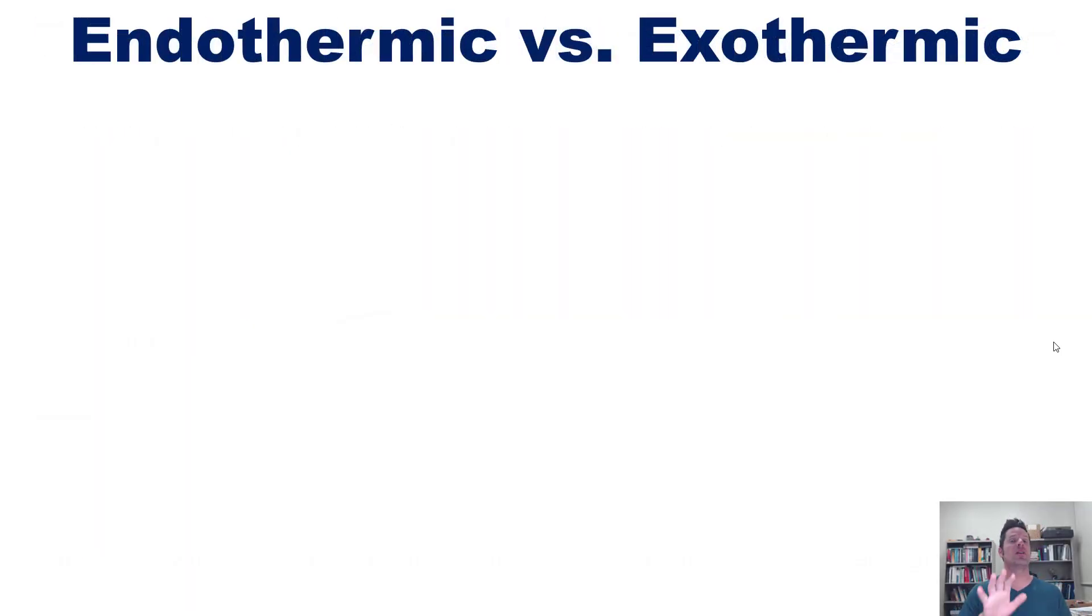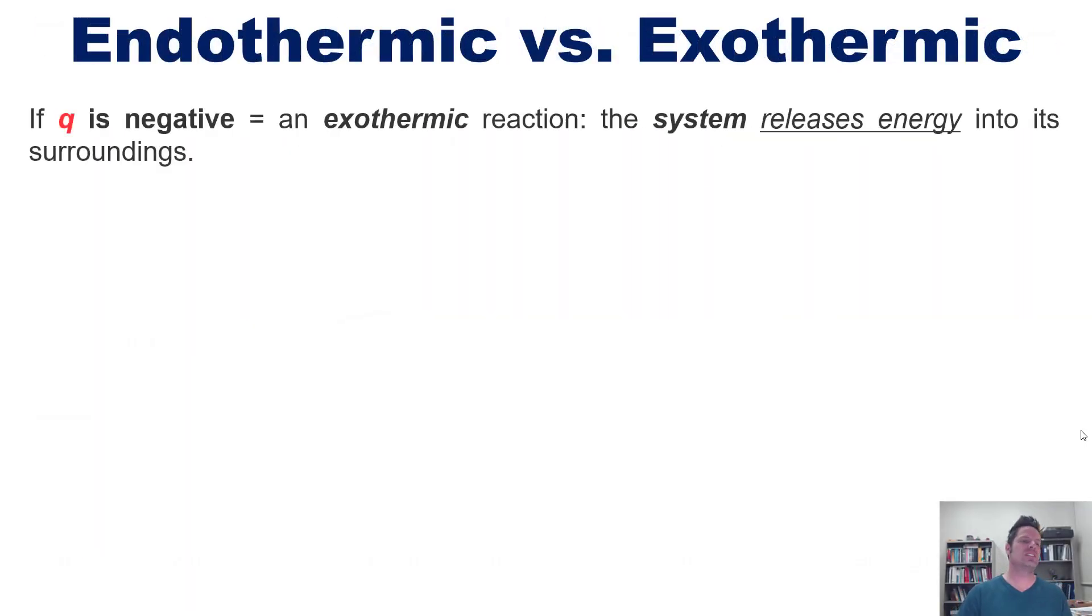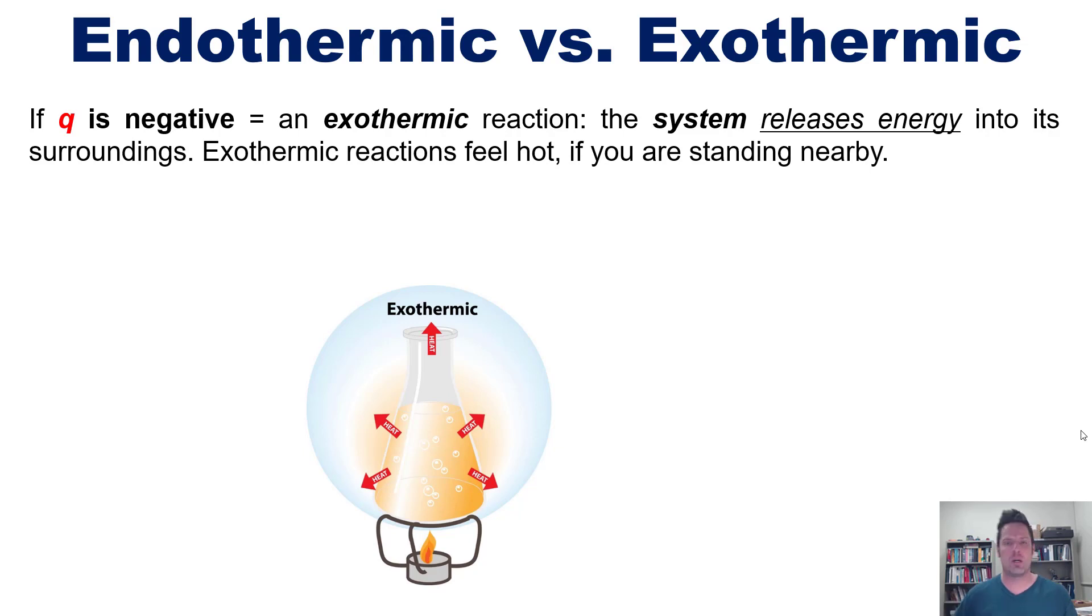As it turns out, and this is very important to remember, when Q is negative, you have an exothermic reaction. That's the word that we use for a delta E negative scenario. In an exothermic reaction, the system releases energy into its surroundings. Exothermic reactions or processes, by the way, feel hot if you're standing nearby.